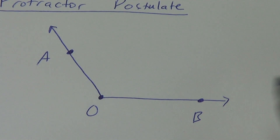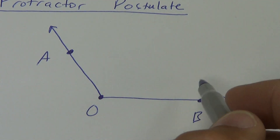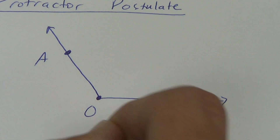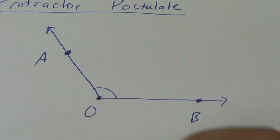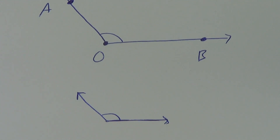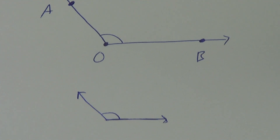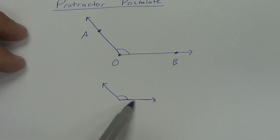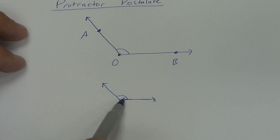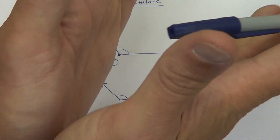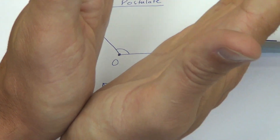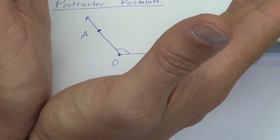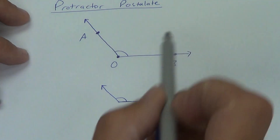All the protractor postulate says is that you can measure this angle. Now, these two angles drawn are really the same size — the length of the ray does not affect the size of the angle. The size of the angle is how wide open it is. Using my hands — that angle between them changes the size of the angle, not the length of the ray. So you need to make sure you understand that.